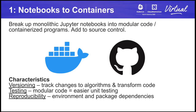Firstly, you want to containerize all the things. In this step, you need to break up your experimental Jupyter Notebooks into modular code and containerized programs. Once that is done, you add it to your source control system — i.e., GitHub. After this step, changes to your algorithm and transform code will be tracked. You'll also have software that is easier to write unit tests for since your code is more modular, and you'll more easily be able to reproduce things because you dockerized all the things.